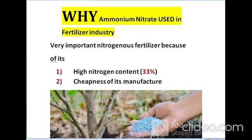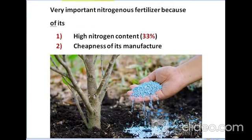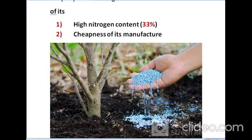Why is Ammonium Nitrate used in fertilizer industries? There are two reasons. The first is that Ammonium Nitrate provides high nitrogen contents of around 33%. The second reason is that its manufacturing is cheap.